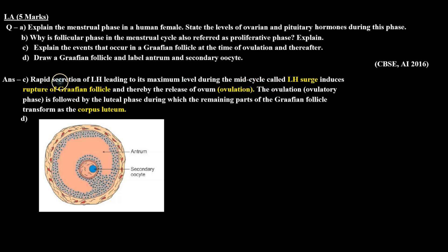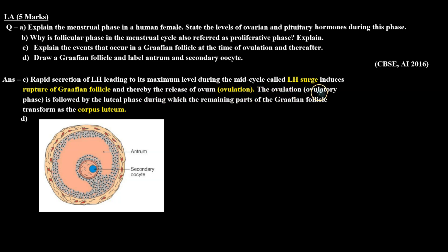C part: Rapid secretion of LH leading to its maximum level during the mid cycle — called LH surge — induces rupture of the Graafian follicle and thereby the release of the ovum, that is ovulation. The ovulatory phase is followed by the luteal phase, during which the remaining parts of the Graafian follicle transform as the corpus luteum.